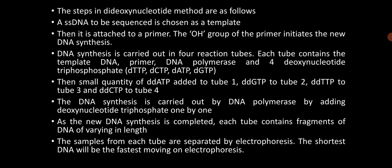The steps in the dideoxy nucleotide method are as follows. A single-stranded DNA to be sequenced is chosen as a template and attached to a primer. The hydroxyl molecule of the primer initiates the new DNA strand synthesis. The DNA synthesis is carried out in four reaction tubes. Each tube contains the template DNA, primer, DNA polymerase, and four deoxy nucleotide triphosphates — deoxy adenine triphosphate, deoxy thymine triphosphate, deoxy cytosine triphosphate, and deoxy guanine triphosphate — as raw materials without which DNA cannot be synthesized.